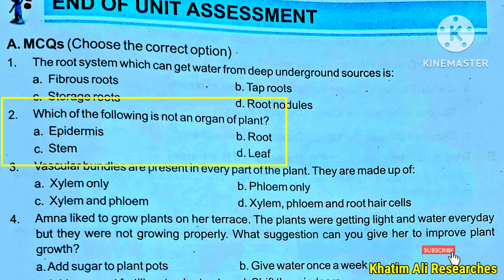Question 2: Which of the following is not an organ of a plant? Options: A. Epidermis, B. Root, C. Stem, D. Leaf. The leaf, stem, and root are organs of the plant. So the epidermis is not an organ — it is a tissue.